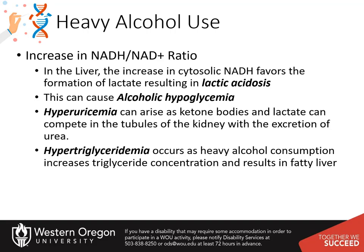Thus, the pyruvate that does form favors anaerobic conversion to lactate and can result in lactic acidosis, or lowering of blood pH levels. Low rates of gluconeogenesis can also contribute to hypoglycemia that can be seen during binge drinking. Hyperuricemia, or an increase in blood levels of uric acid, can also occur due in part to increased production of ketone bodies and lactic acid. Both the ketone bodies and lactate can compete with uric acid for excretion into the urine within the kidney, so uric acid gets retained and heightens blood levels.